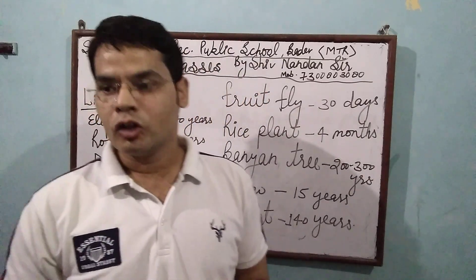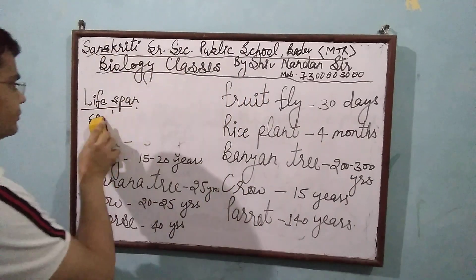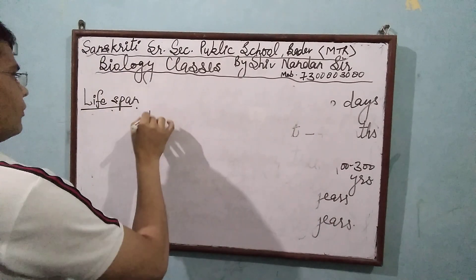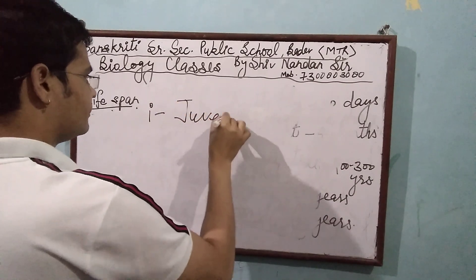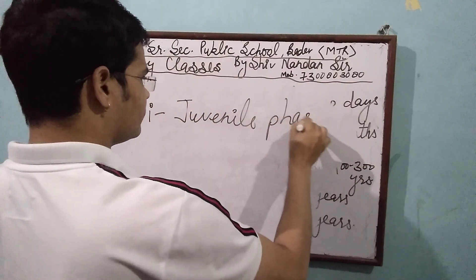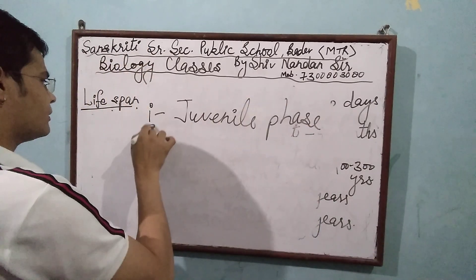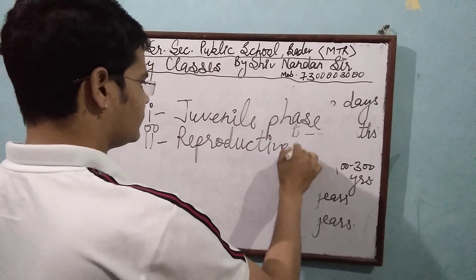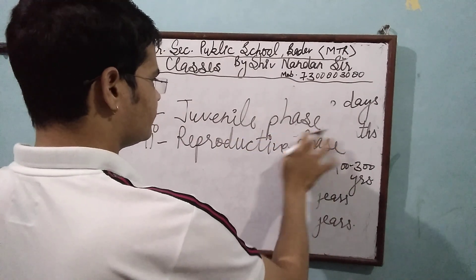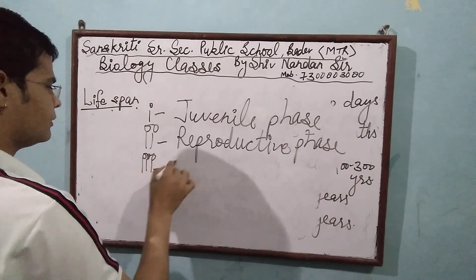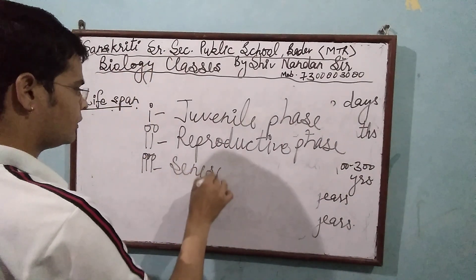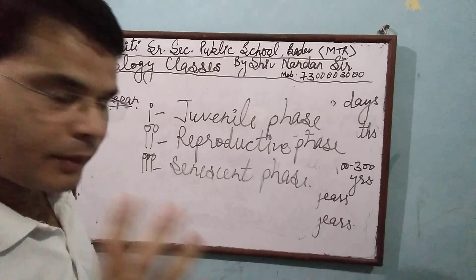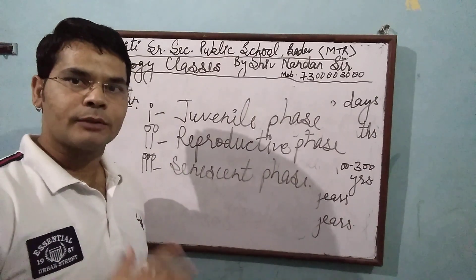There are three stages of Life Span. First stage is the Juvenile phase. Second stage is the Reproductive phase. Third stage is the Senescent phase. The organism completes this phase.